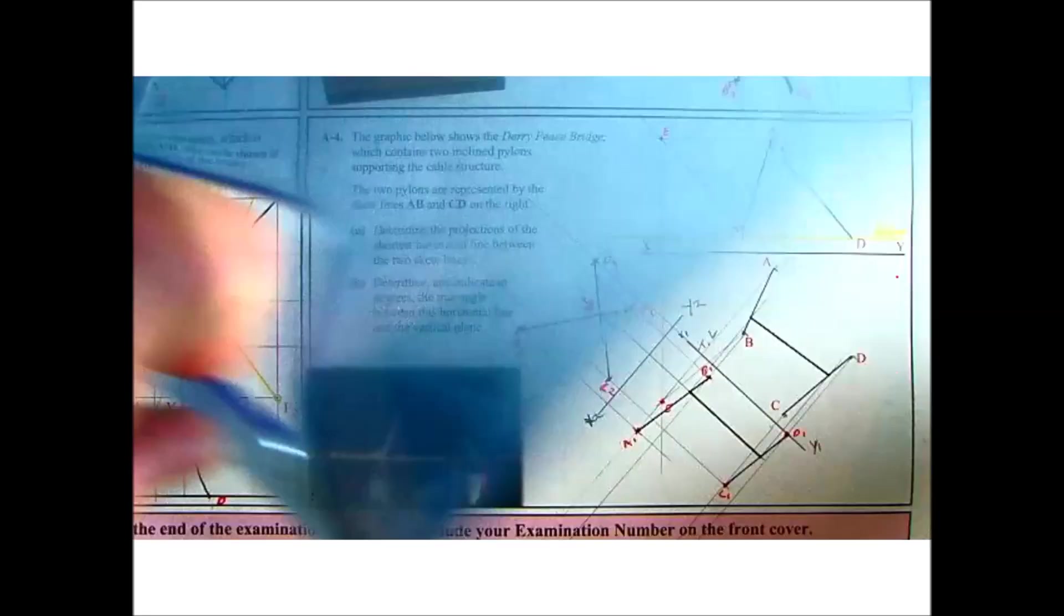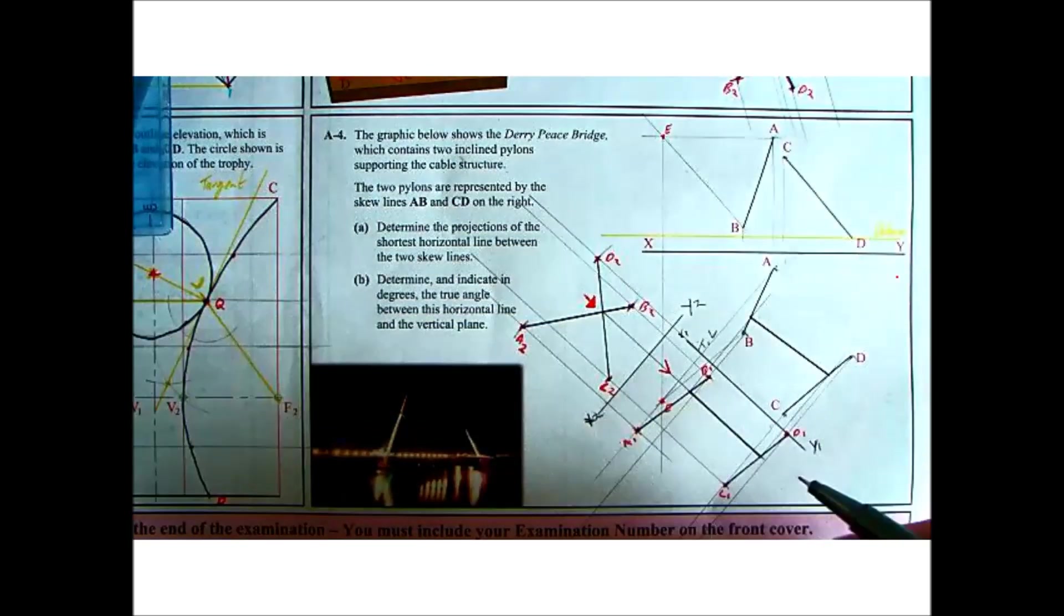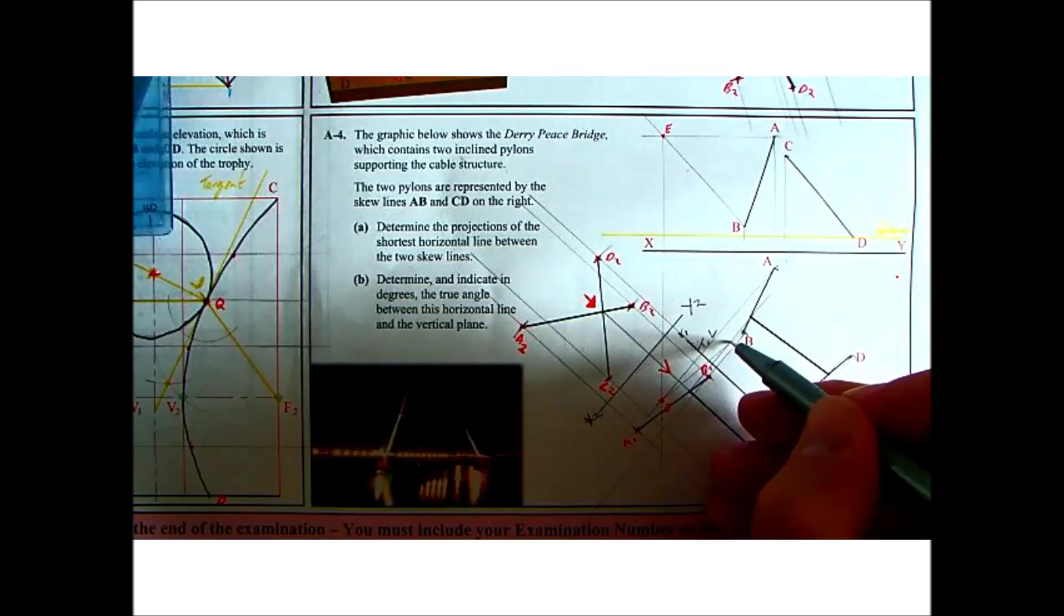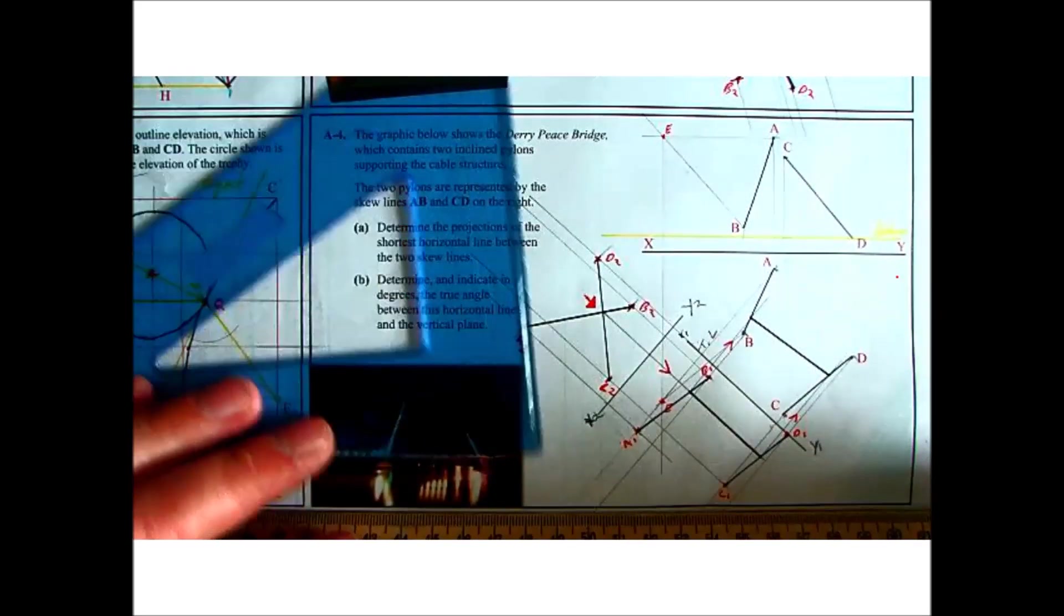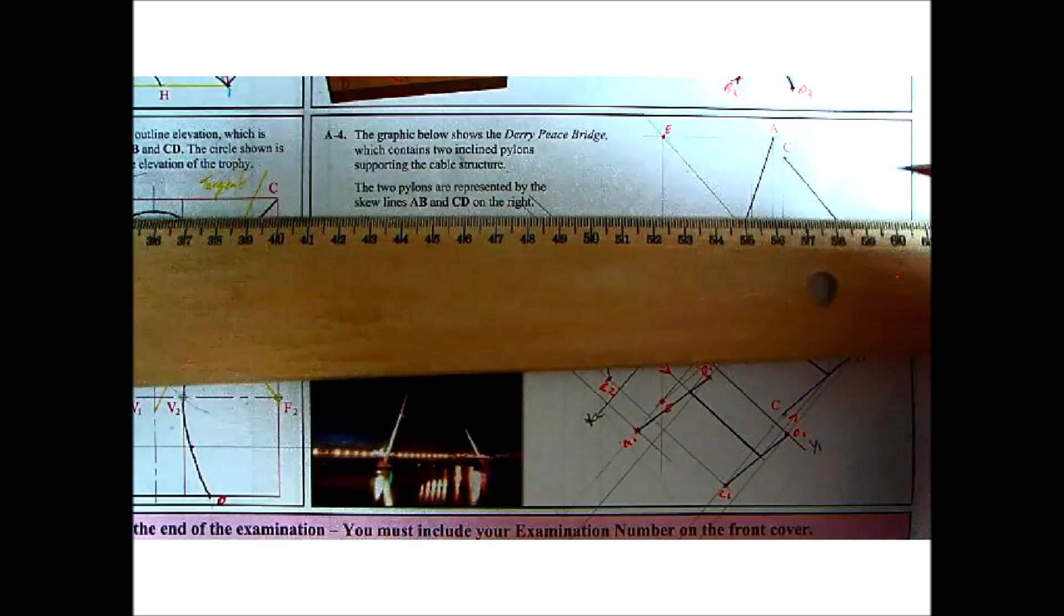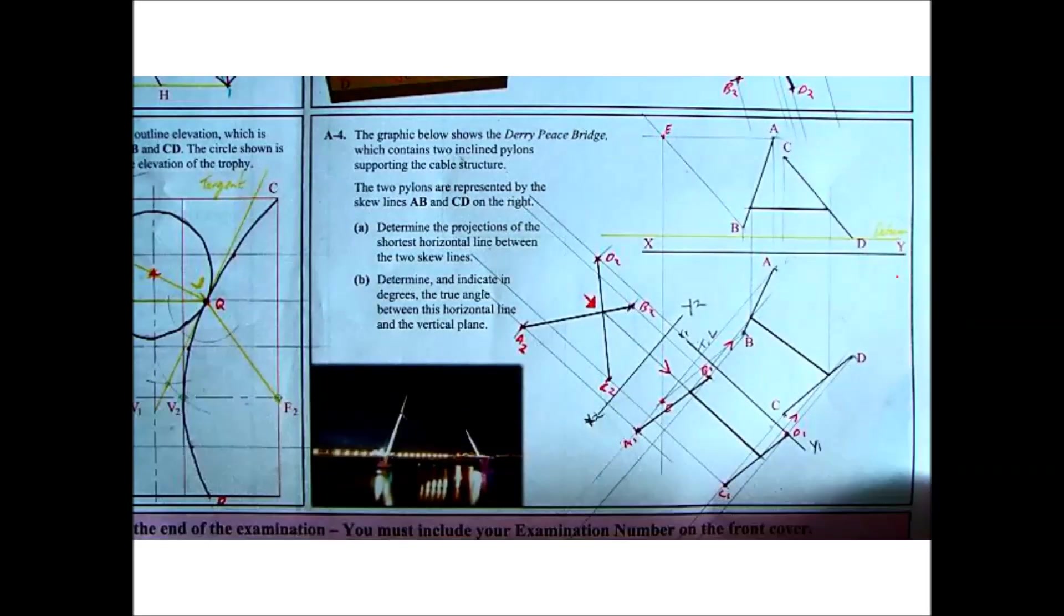So you project them back now. So you bring it down here. And then you bring it this direction. Now where they cross there, bring it back up to the elevation. And it should give you a horizontal line. Okay, and that's your shortest horizontal distance.